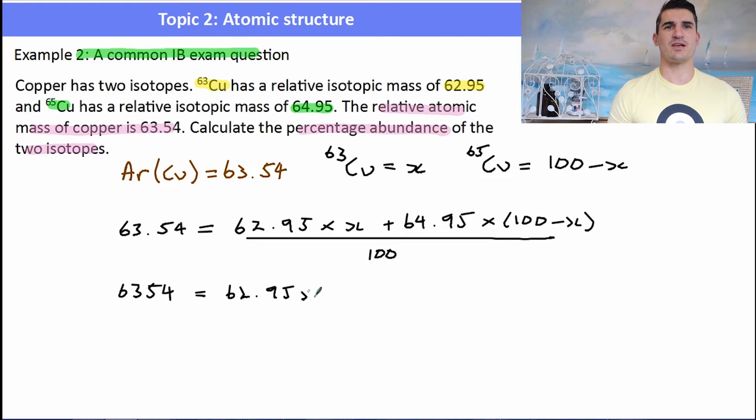So now this just becomes a maths problem. So I take the hundred over to the other side and multiply by a hundred, and then I'm just going to expand the brackets and simplify the X's. So we have 62.95X plus 6495 take away 64.95X. I'm going to take the 6495 to the other side to give me minus 141, and then I'm going to combine the like X's. So now I just get into a nice simple little problem where I can solve for X, which will give me my percentage abundance.